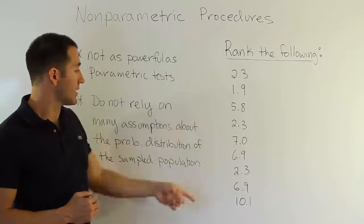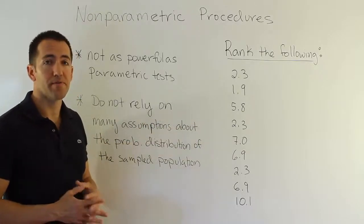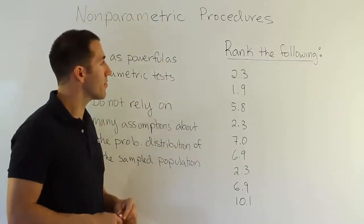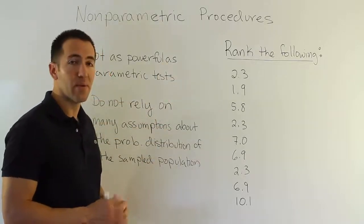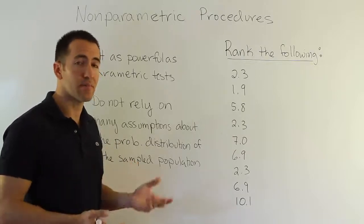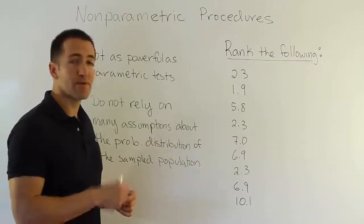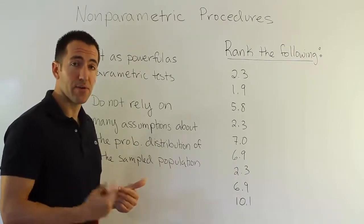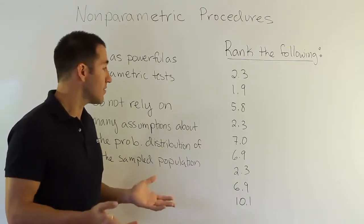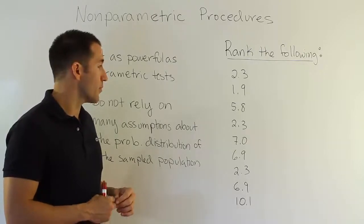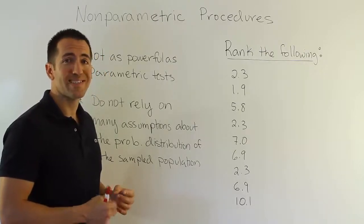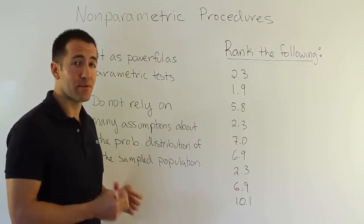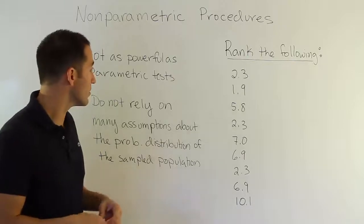Let's talk about one last thing in this video: one of the common skills needed in nonparametric procedures. We very often have to rank data, so let's go over an example. Ranking means we literally say what's the smallest number, the next smallest, the largest, and so forth — putting a number next to each value, the smallest getting rank one, the next smallest getting two, and so on. There's an issue that makes it more difficult though: ties. What do you do when values are the same?